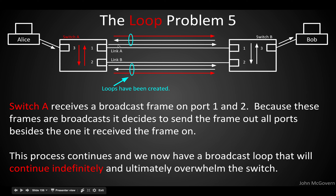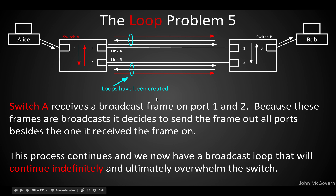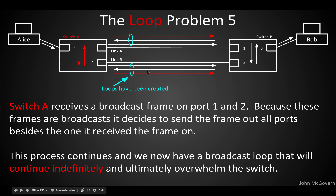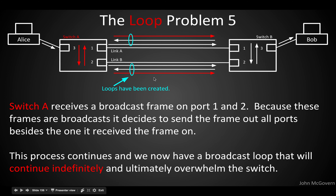Switch A receives the broadcast frame on port 1 and port 2 again — two copies — and because it's a broadcast frame it sends those frames out all other ports. In the layer 2 Ethernet header there's no time-to-live value, so there's no aging-out process. This will happen over and over again until the switch is unplugged or runs out of resources, and the switch will do this as fast as it possibly can for every broadcast. Literally, this will take networks down — a broadcast loop.